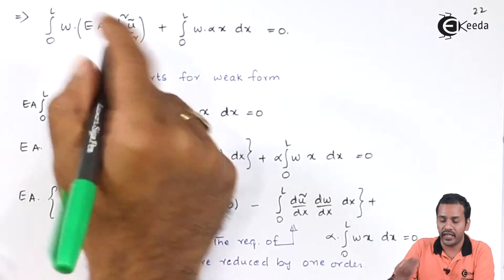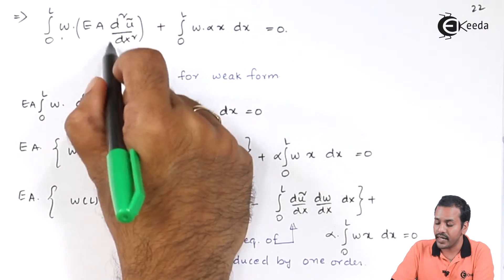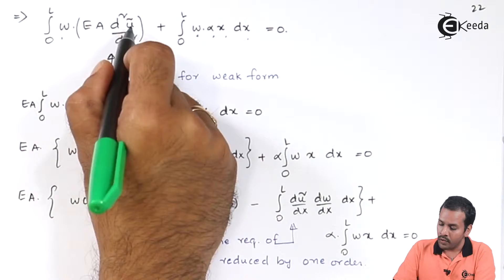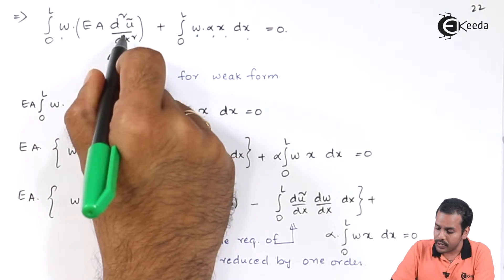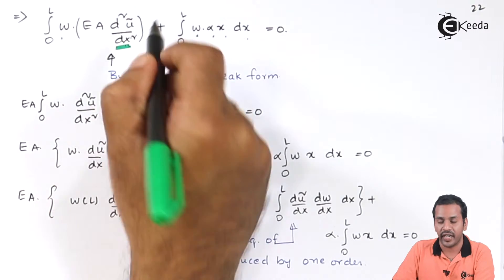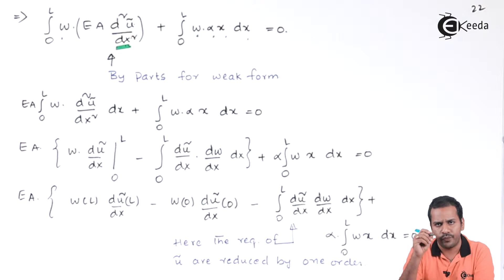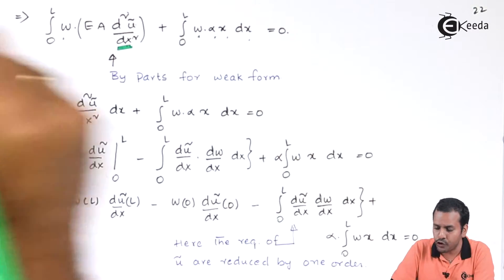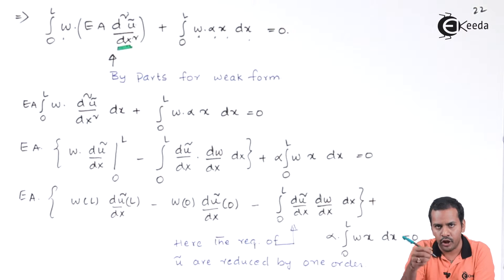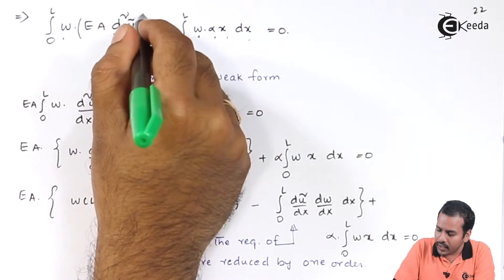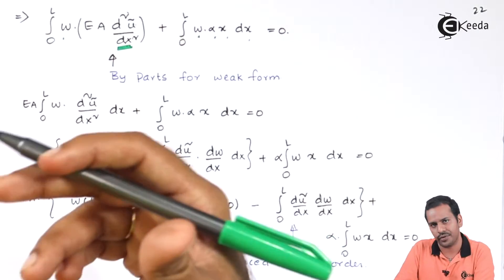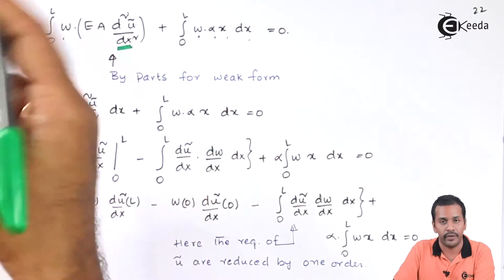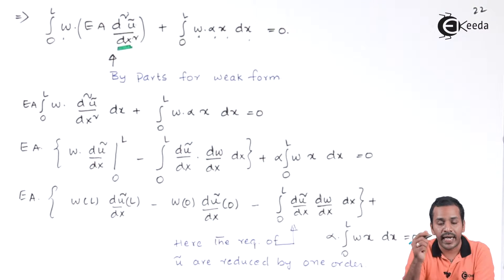We have two terms: integral from 0 to L of weight × EA·d²u-tilde/dx² dx, plus integral from 0 to L of weight × αx dx = 0. This is the important part: we have a second-order differentiation here. Any trial function we assume must be differentiable up to the second order. If we assume a constant or even a linear trial function, the d²u-tilde/dx² term will vanish — that's why we need at least a quadratic trial function.